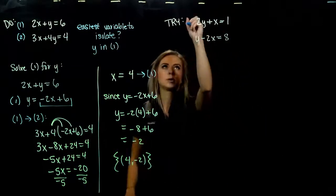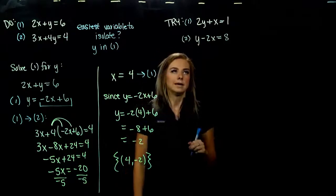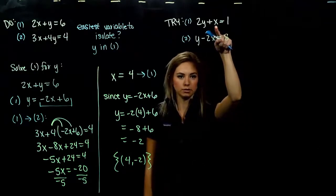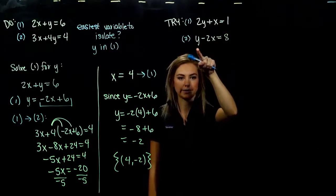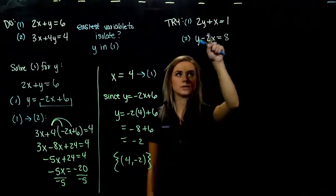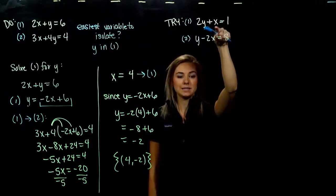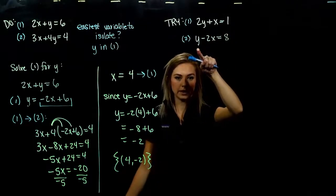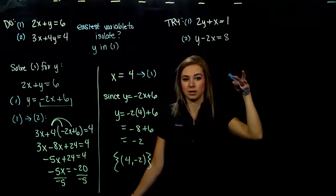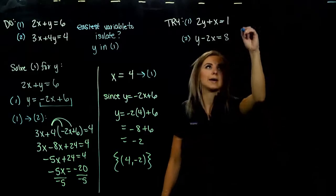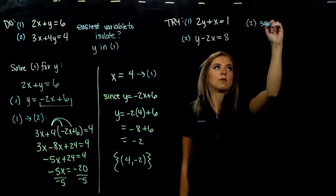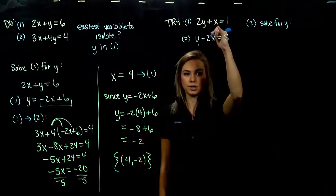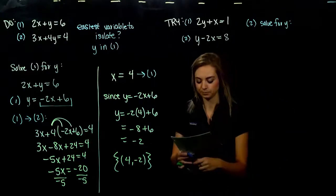Looking at the first one, I'll label them 1 and 2. It doesn't really matter what you try to isolate — x in the first equation is a good option, and y in the second equation too, since both have a coefficient of 1. If you isolated x in the top, great. If you isolated y in the bottom, great — you'll come down to the same answer. I'm actually going to take equation 2 and solve for y, so you can see this other version.